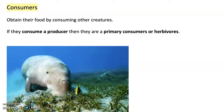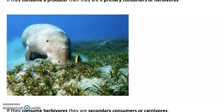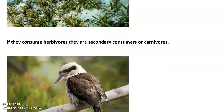Then we get to consumers. Consumers obtain their food by consuming other creatures. If the consumer consumes a producer, they are known as a primary consumer — also called a herbivore. Think 'herb' like a plant — herbivore means plant eater. Here is a lovely picture of a dugong eating seagrass; it is a herbivore.